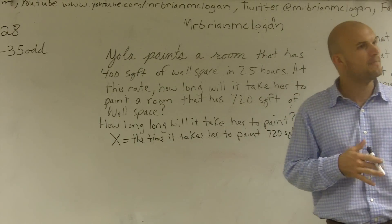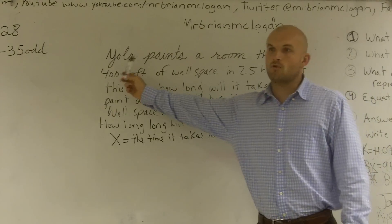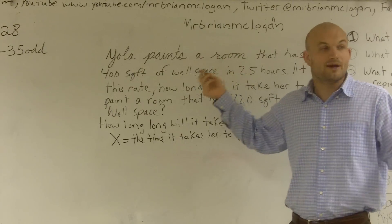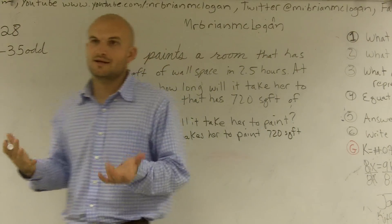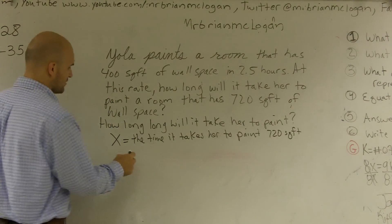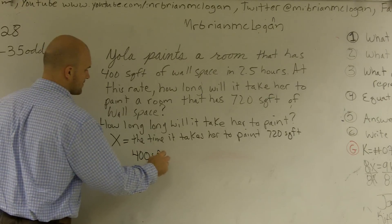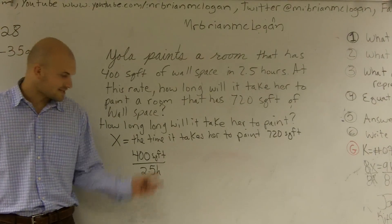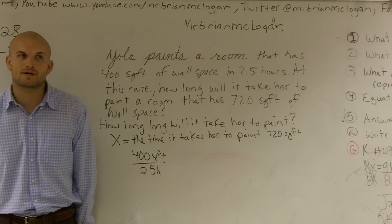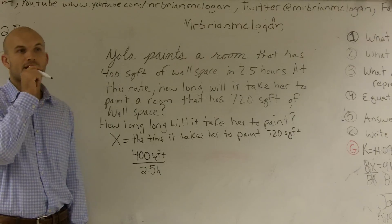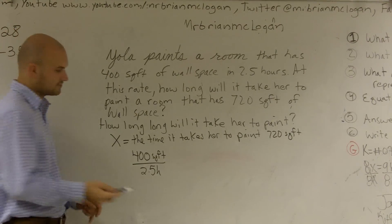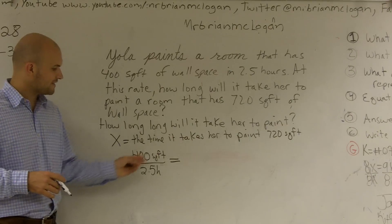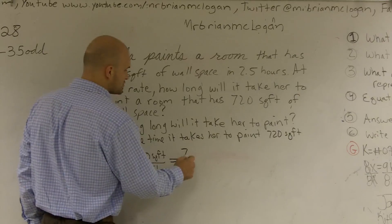However, what I do see that's kind of going on is I'm seeing comparisons. I'm comparing how much wall space it is compared to how many hours it takes her to paint. So what I have is a comparison. And remember, whenever we compare two quantities, that is what we call a ratio. So let's compare 400 square feet to 2.5 hours. Well guys, that's not going to help us solve for X. To help us solve for X, what we're going to have to do is set up a proportion. And remember, a proportion is going to be when we have a ratio equal to another ratio. So here I have 400 square feet is to 2.5 hours as 720 square feet.